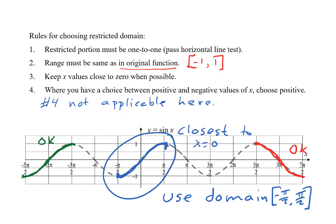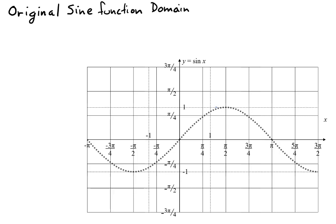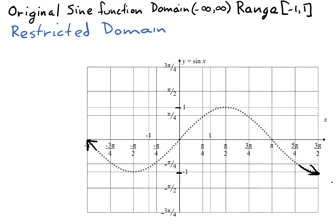If we didn't want to include those points, we'd use round parentheses instead. Now that we've found the correct restricted domain, we're going to sketch the inverse of the sine function. The original sine function has a domain from negative infinity to positive infinity — the sine wave keeps going to the left and to the right. It has a range of negative one to one. The appropriate restricted domain goes from x of negative pi over two to x of positive pi over two, giving us a section of the sine function that still has the same range, negative one to one, as the entire sine wave.